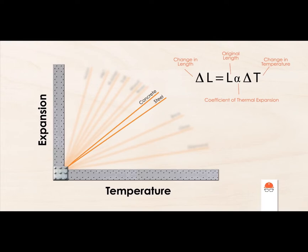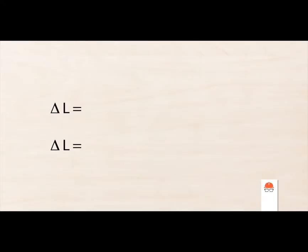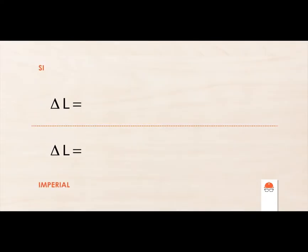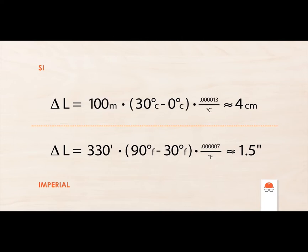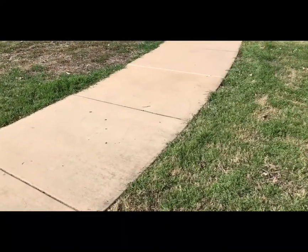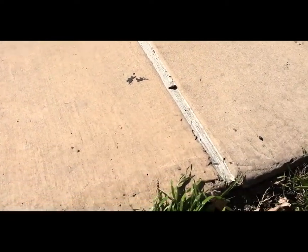But even though steel and concrete expand and contract at the same rate, they still expand and contract. A perfect example of this is a sidewalk. Plugging in values for the average length of a city block, the average high and low temperatures in a given year, and the thermal expansion coefficient for concrete, we can see the total movement of a sidewalk over a year can be upwards of 4 centimeters, or 1.5 inches. So instead of leaving a large gap, we leave small gaps spaced every so often. Every so often you'll see an actual break in the concrete filled with a flexible material — these are expansion joints that give the walkway freedom to move from temperature fluctuations.